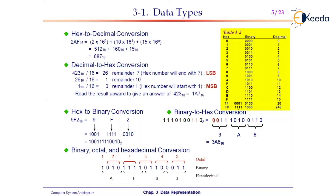423 ÷ 16 = 26 remainder 7. 26 ÷ 16 = 1 remainder 10 (which is A). 1 ÷ 16 = 0 remainder 1. So the answer is 1A7.